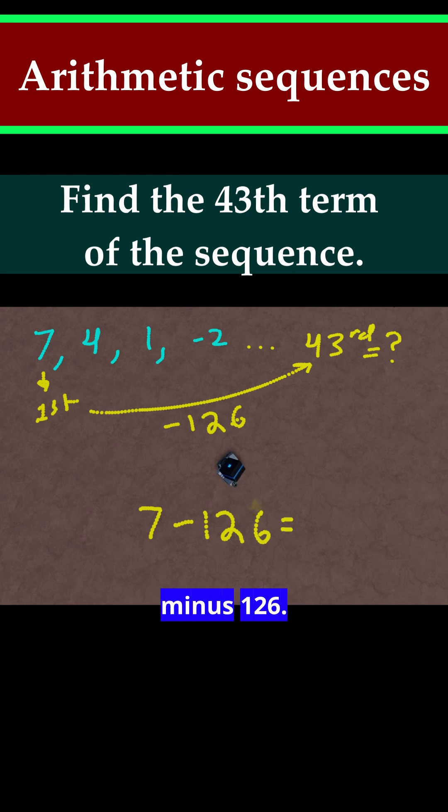So just do 7 minus 126. The answer is negative 119. And that is our answer to this problem. This is the 43rd term.